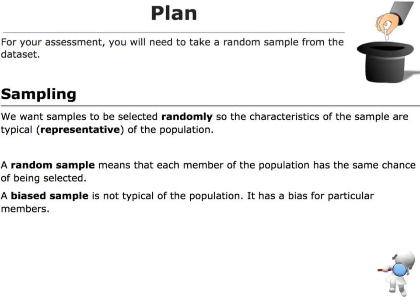The key idea behind this is that we want to take a random sample. There are two ways that we can take samples: we can either collect them randomly, or we can take a biased sample. Those are the two types.